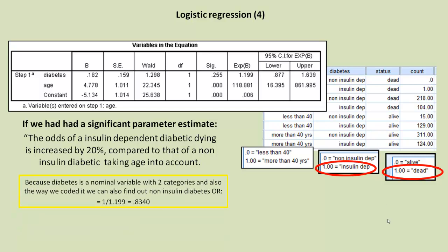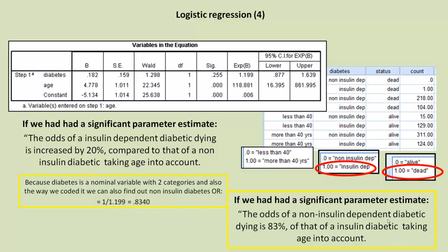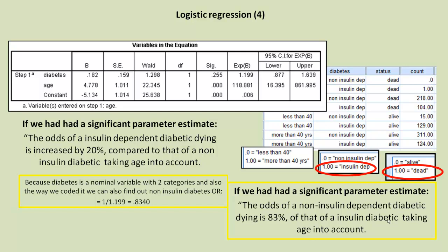Because our diabetes variable is a nominal variable and it has two categories, and because of the way we coded it, we can actually take its reciprocal value: 1 divided by 1.199, which gives us 0.8340. That actually becomes our odds for the non-insulin-dependent diabetic. So if we had had a significant result, we could have said also that the odds of a non-insulin-dependent diabetic dying is 83% that of an insulin diabetic taking age into account.